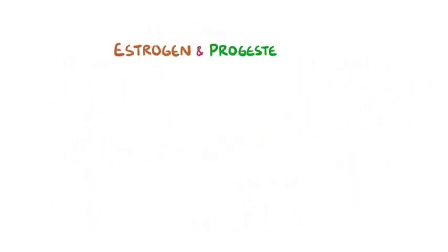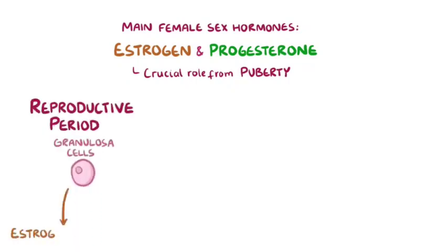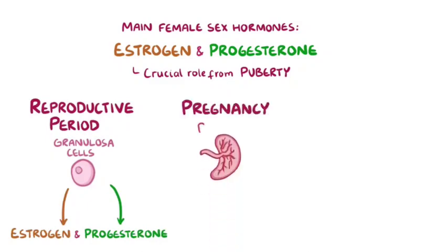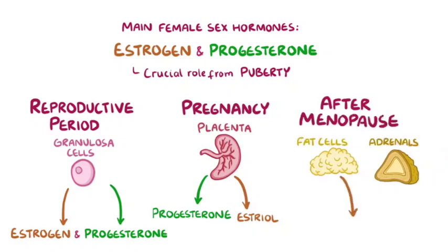As a quick recap: estrogen and progesterone are the main female sex hormones, and they play a crucial role starting with puberty. During the reproductive period, granulosa cells secrete estrogen and progesterone. During pregnancy, the placenta secretes estriol and progesterone, and after menopause, small amounts of estrone are produced by the adrenal glands and the fat cells.